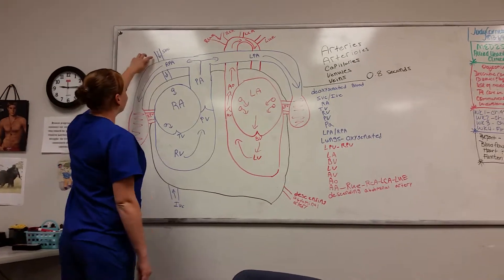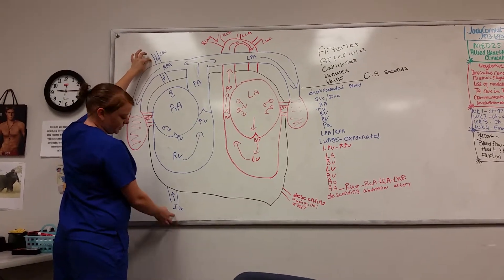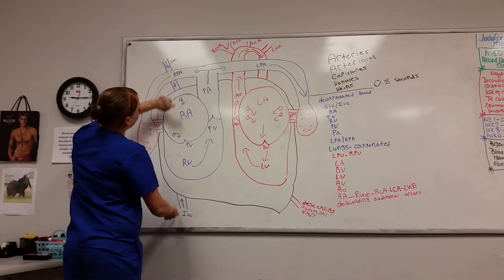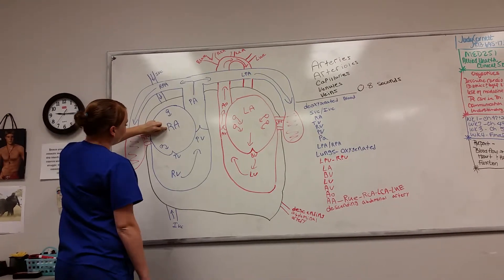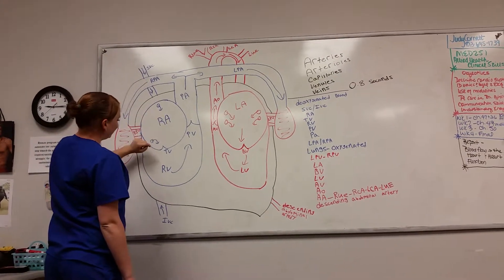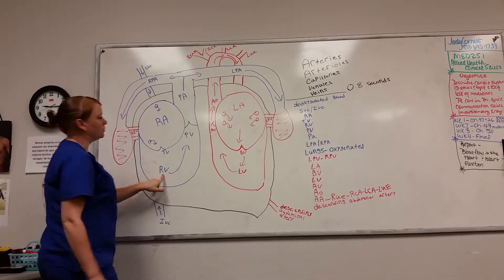This is the blood flow of the heart. It starts in the superior vena cava and the inferior vena cava. It goes into the right atrium through the tricuspid valve to the right ventricle.